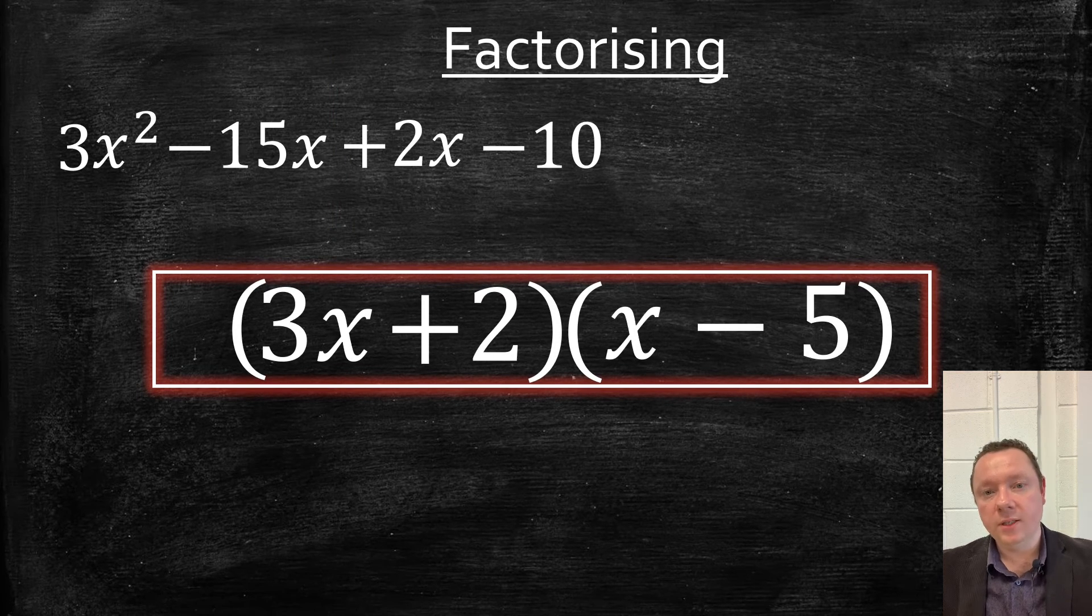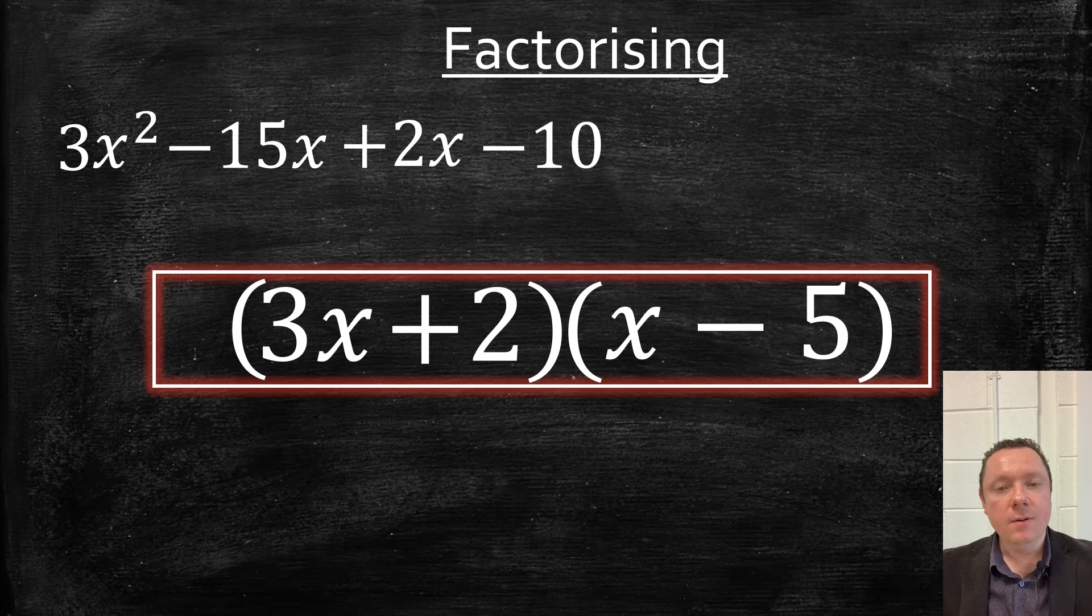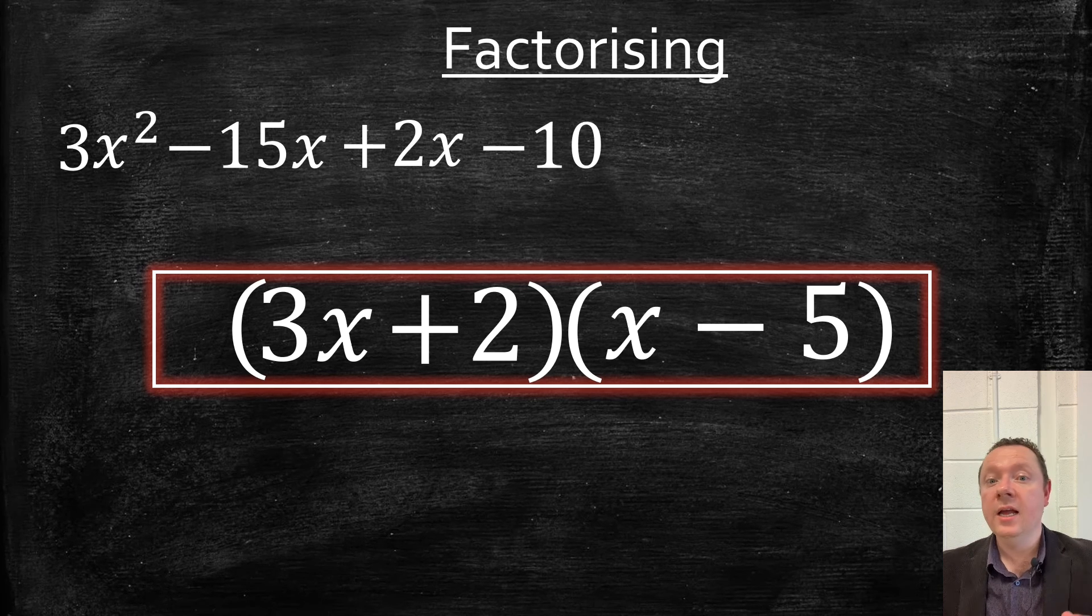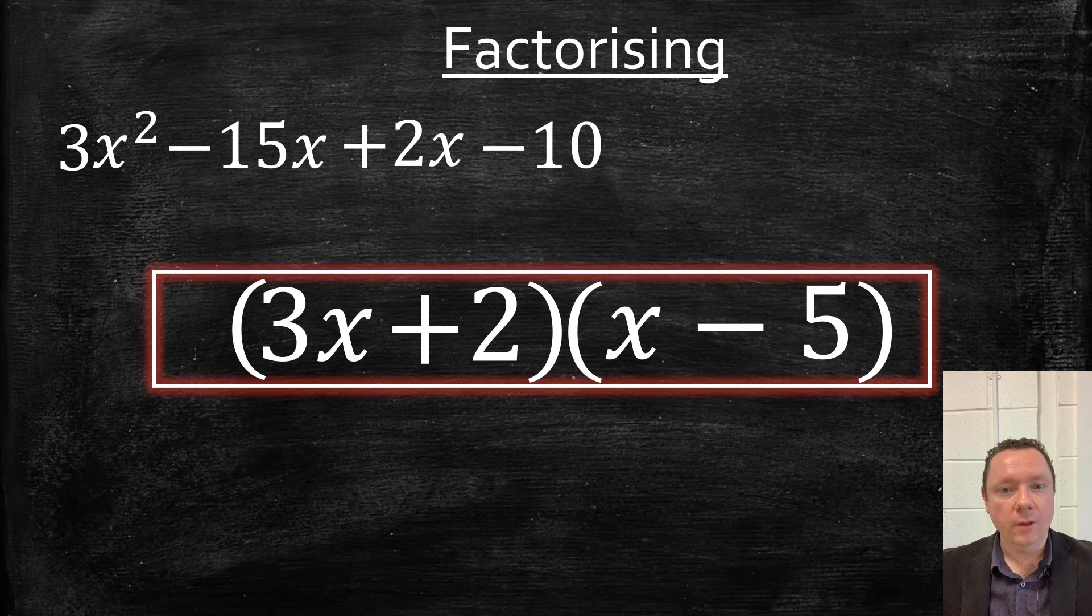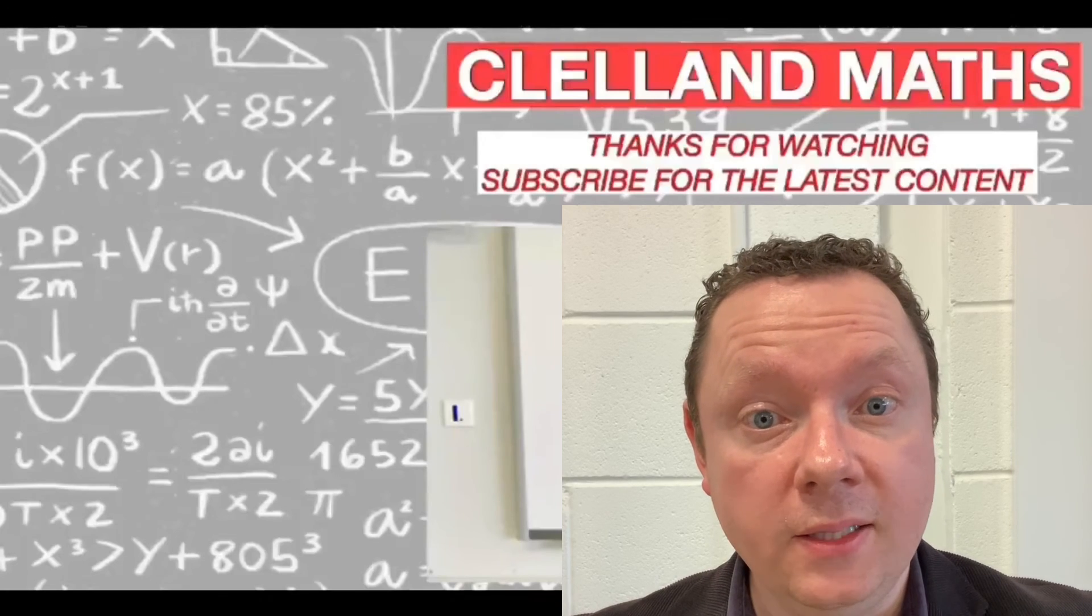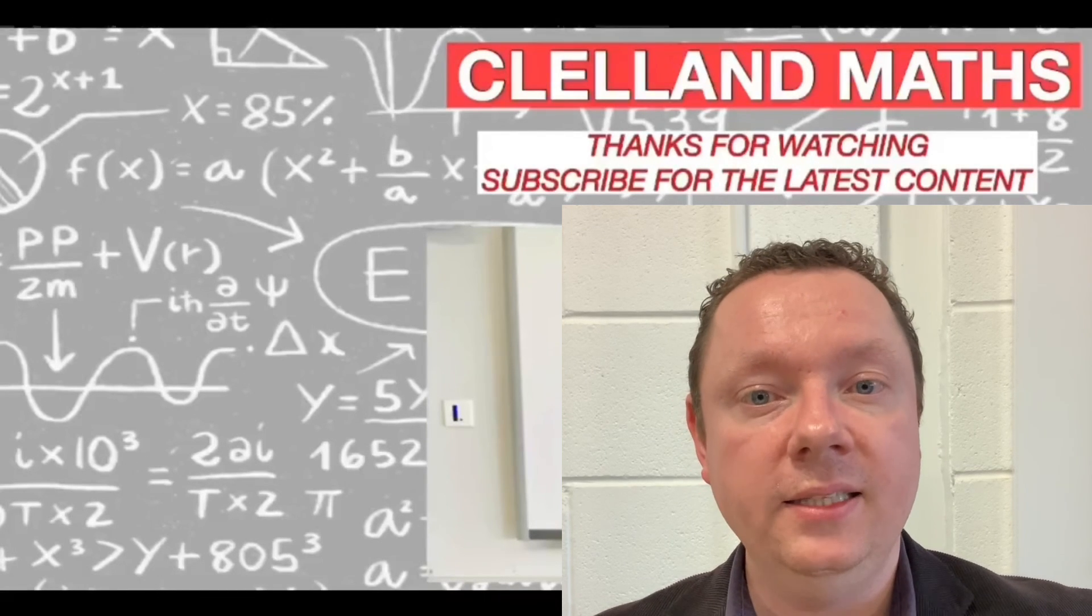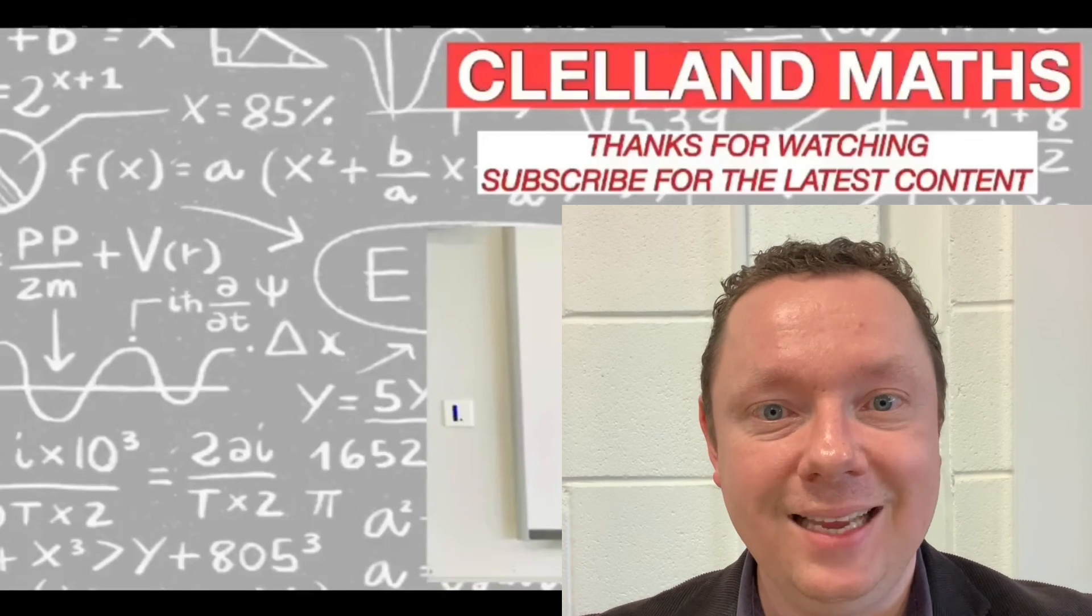These ones with a number in front of x squared are harder. We've got a longer process. I urge you to go through this a few times to get the hang of it. Your teacher may have shown you a slightly different method, but this is one way that I feel is a good way to do it. This has been Mr Claren from Claren Maths, and today we've looked at factorizing what you'll be needed in the 2022 National 5 exams. Take care, stay safe, and goodbye.